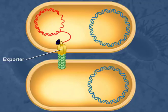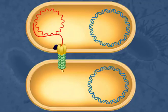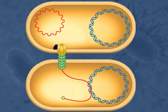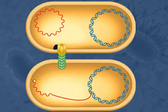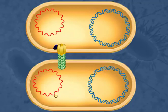The exporter pumps the T-DNA relaxase complex into the recipient cell. Once the entire T-DNA molecule is transferred to the recipient cell, relaxase joins the ends to make a circular DNA molecule.